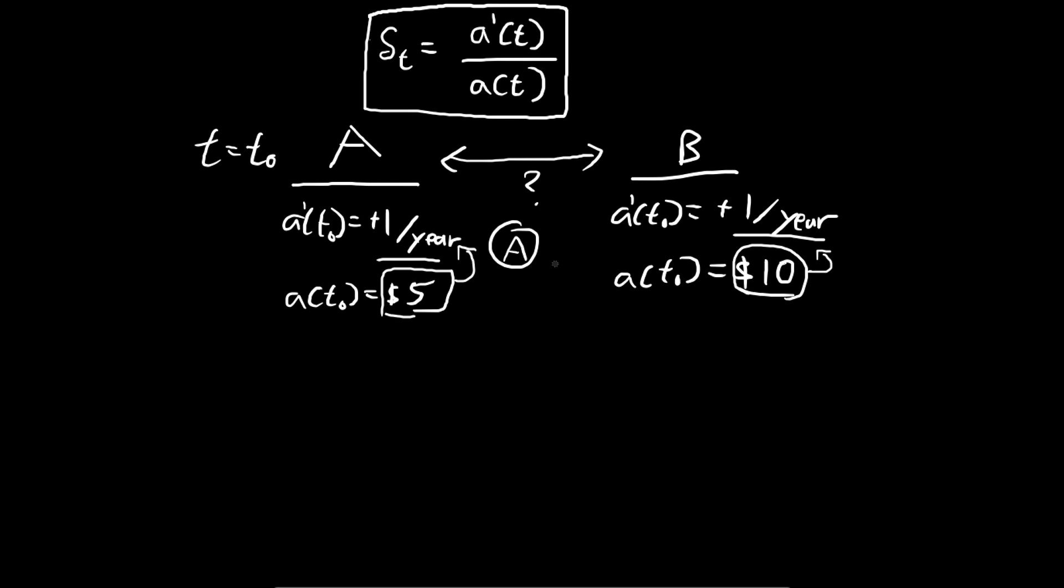Using this example, I'm hoping to illustrate the fact that to measure whether an investment is good, we need to take into account two things. First, we need to take into account the growth, which is the A prime here, and also the amount of investment. In this case, the smaller the investment, the better. We need less money to experience this kind of growth.